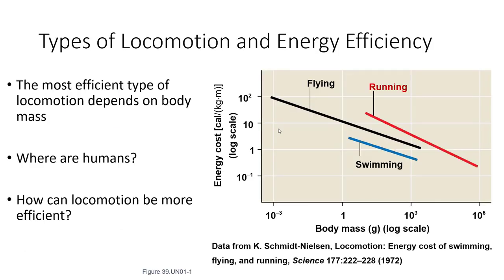There are different types of locomotion, and different types are efficient depending on the body mass of the organism. This is one reason we don't generally see very large organisms that fly — the energy cost varies. For smaller organisms, flying is more efficient than running. For larger body masses, running or swimming has a lower energy cost.